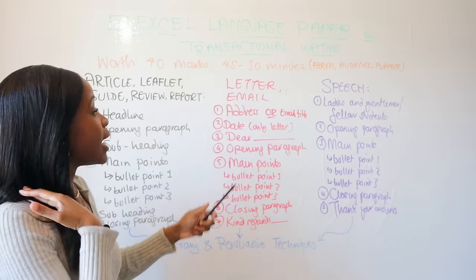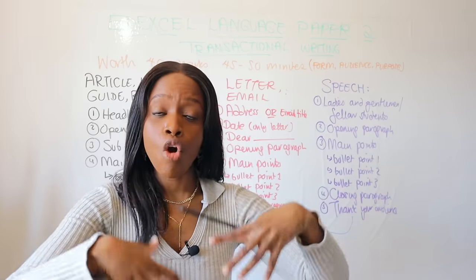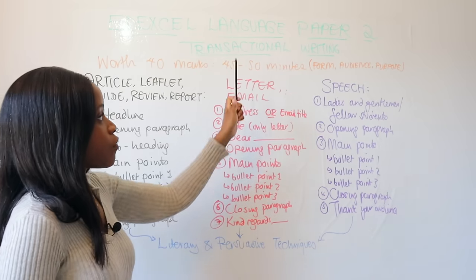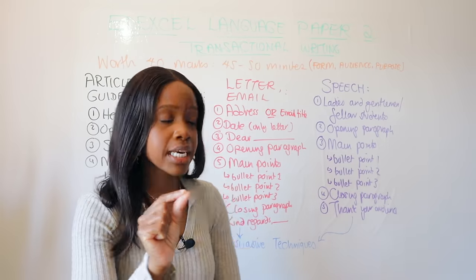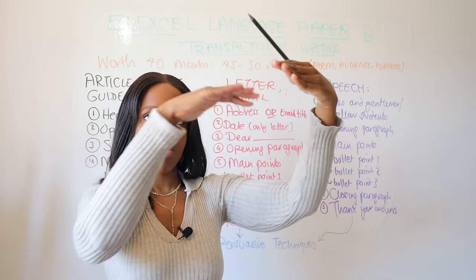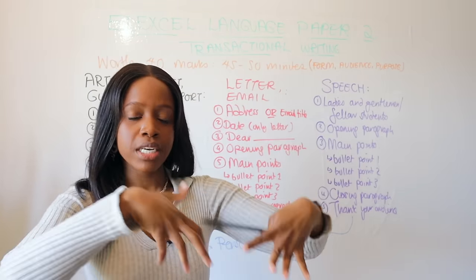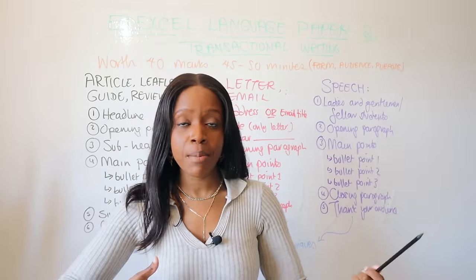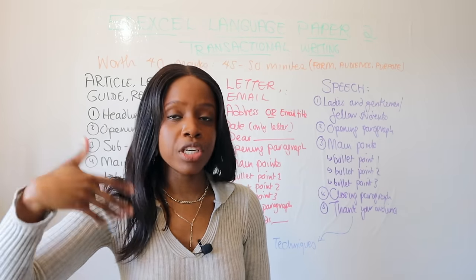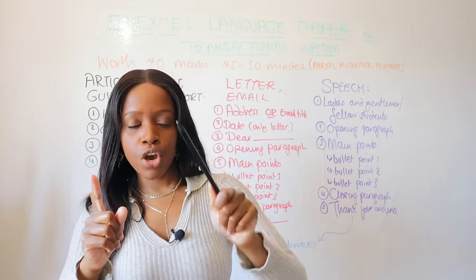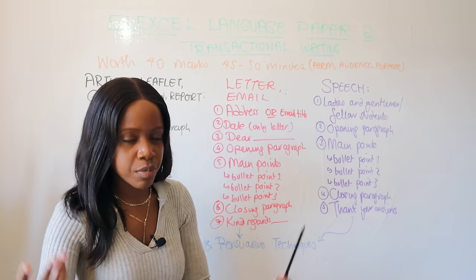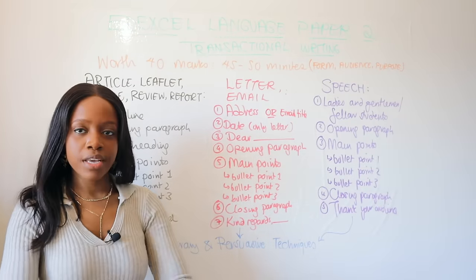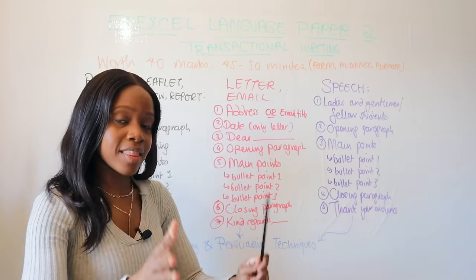When it comes to a letter or an email, I've grouped them together because they're basically about corresponding with somebody. Irrespective of whether it's a letter or an email, start off with the recipient's address — for example, MP John Smith, 1 Westminster Way, Westminster London, SW1 1KB. Or if it's an email, add an email title such as 'Environmental Pollution: What We Need to Do'. For a letter, include the date you're writing. Don't make up a fictional date — just write today's date. You don't need a date for an email.